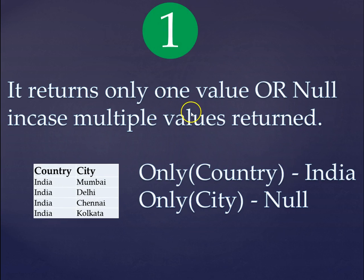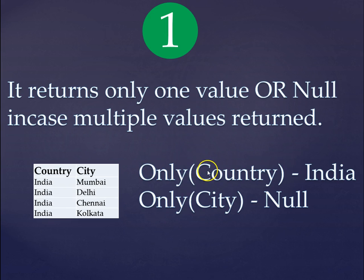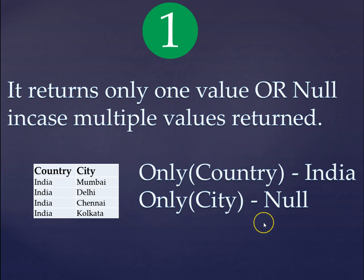As the name suggests, the only() function returns only one value. If it is returning more than one value, it returns null. In a small example, I have two fields: country, which has 'India', and city, which has different cities of India. If I use the only() function with the country parameter, it returns 'India' because it has just one value — it aggregates the detail and provides one result. But if I provide city as the parameter, it returns null because there's more than one value.